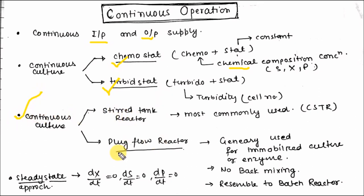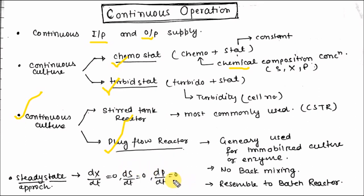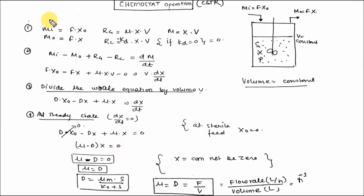The system operates at steady state. Steady state means dX/dt — the change in biomass concentration with respect to time — as well as the change in substrate concentration and change in product concentration with respect to time, are all equal to zero. Now let's discuss biomass production in the chemostat.